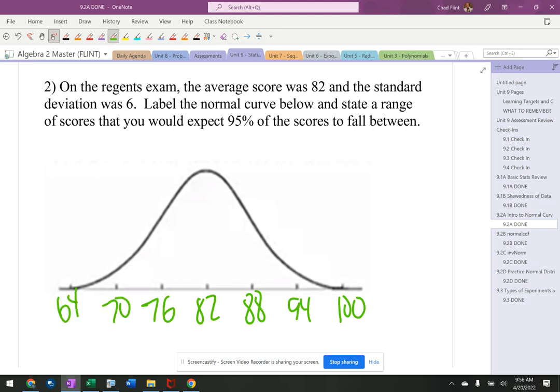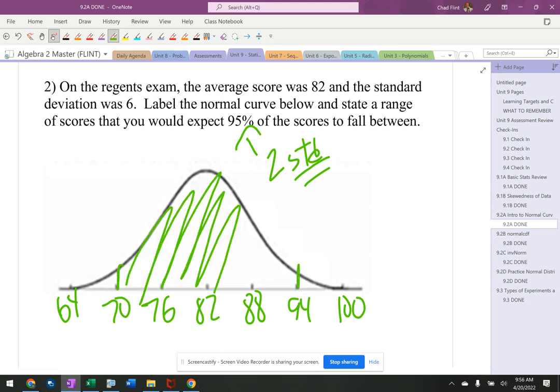70, 64, alright, so 95%, that's two standard deviations, which means go 1, 2, 1, 2, 95% of the scores should be between 70 and 94.